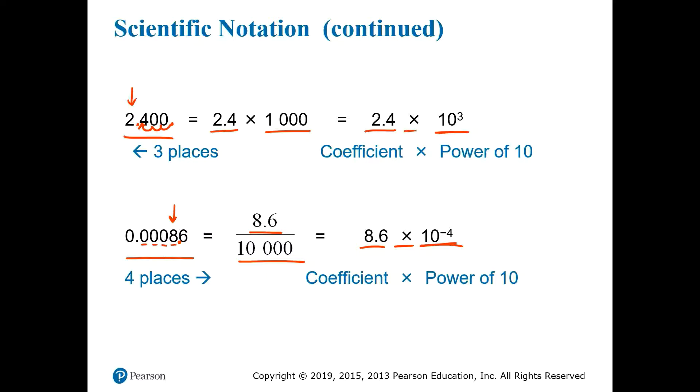Again, you can think of this as moving the decimal four places to the right, one, two, three, four, and that gives you the negative 4 power of 10.